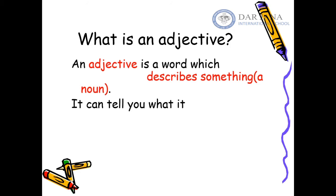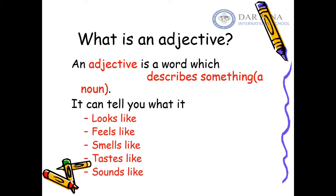What does an adjective describe specifically? It can describe how something looks, how it feels, how it smells, how it tastes, or how it sounds. For example, how does a football look? It's rounded, black, and white — these words describe the appearance. How does an apple feel? It feels soft. How does a coconut smell? It smells nice — so 'nice' is an adjective.